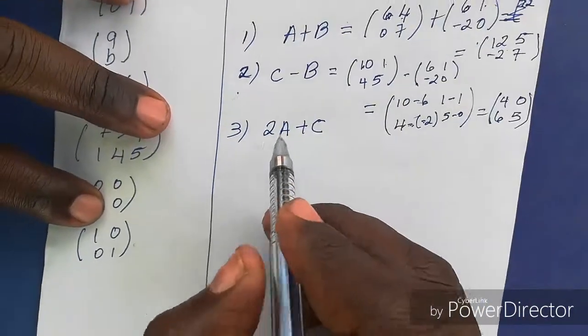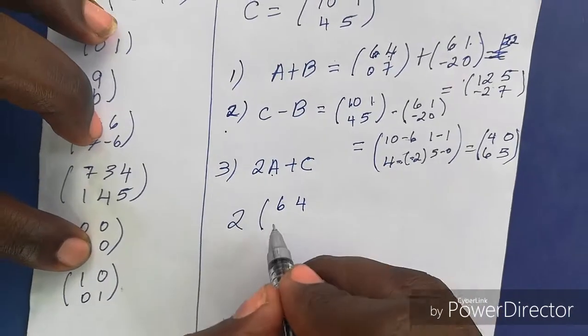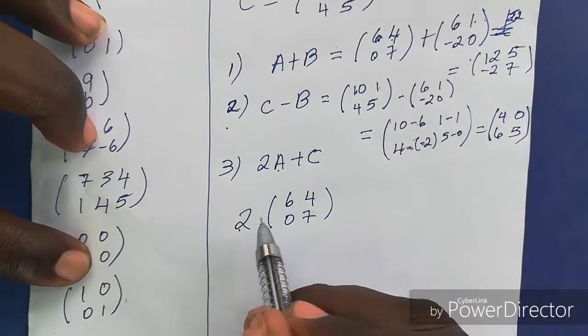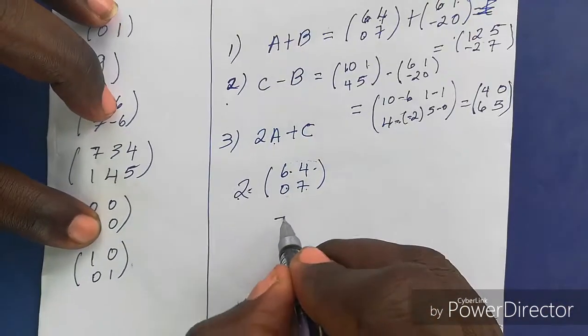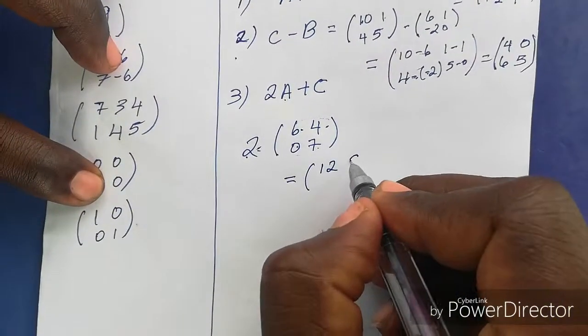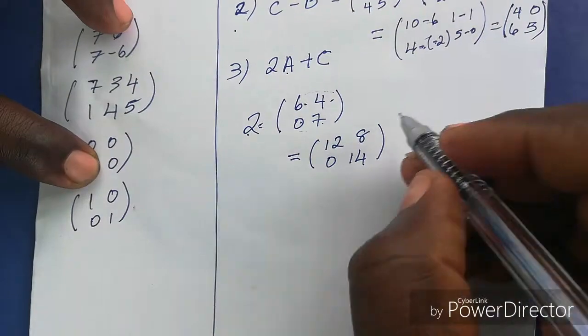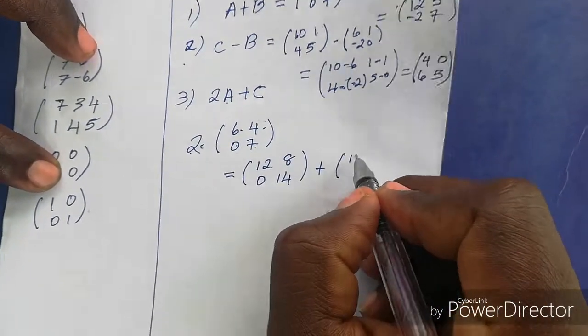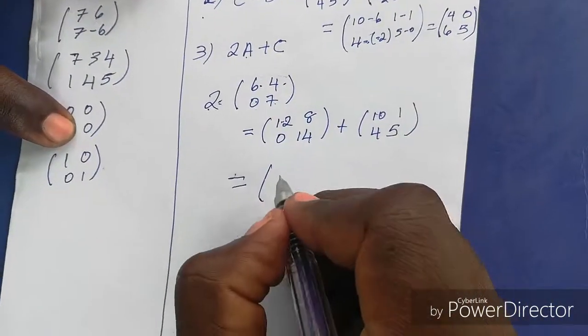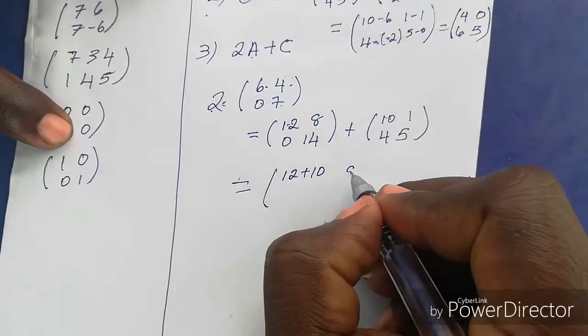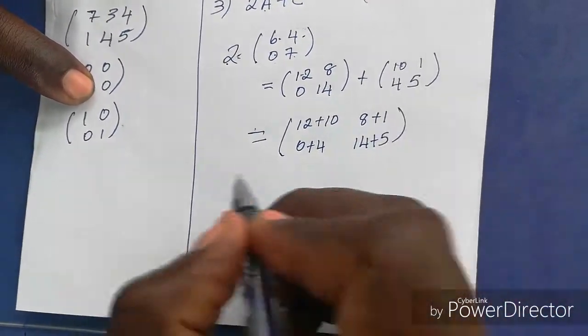Now we're looking at multiplication. This is called scalar multiplication. Don't get scared - all this is trying to say is that the number that is on the outside gets multiplied by everything inside the bracket. So we have two times six, two times four, two times zero, and two times seven. Two times six is twelve, two times four is eight, two times zero is zero, and two times seven is fourteen. So this is 2A. We take the values that are in A and we just double them and add C. So C is (10, 1), (4, 5). Remember when we're adding, we just do place value for place value. This will be twelve plus ten, eight plus one, zero plus four, and fourteen plus five. Twelve and ten gives me twenty-two, eight plus one is nine, zero plus four is four, and fourteen plus five is nineteen.